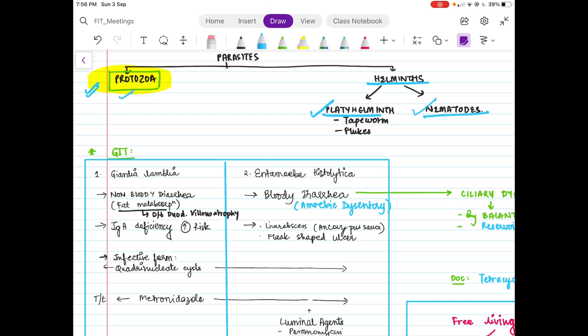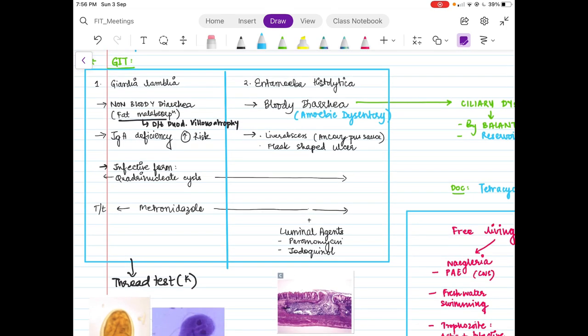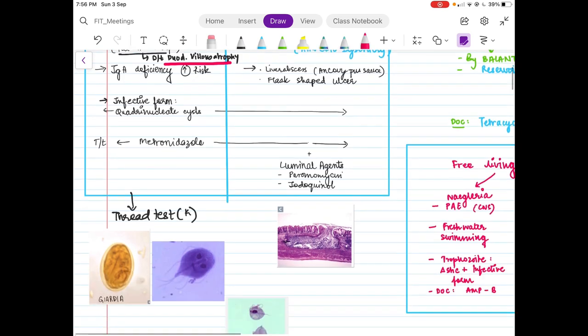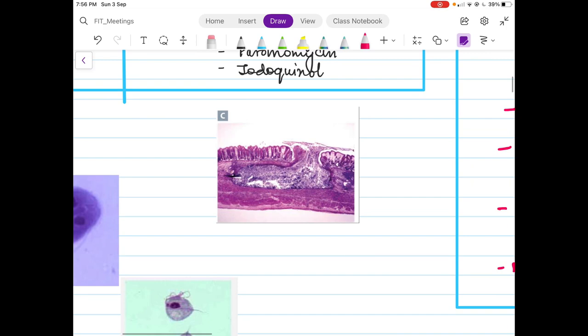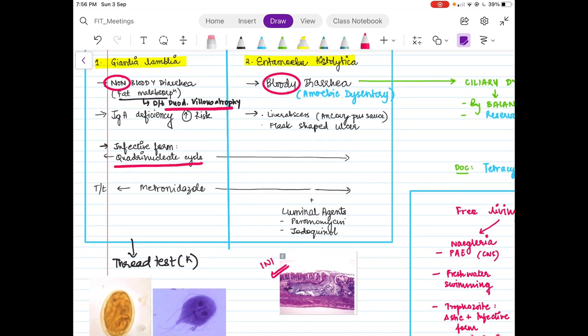Now I will be dealing with Protozoa. Starting with GIT, the first two organisms that we need to know and differentiate are Giardia lamblia and Entamoeba histolytica. Most important is that Giardia causes non-bloody diarrhea which is not caused due to invasion but due to duodenal villus atrophy, whereas Entamoeba causes bloody diarrhea due to invasion. After invading, it causes a histopathological image which is popularly known as the flask-shaped ulcer. This is again an NEET PYQ.